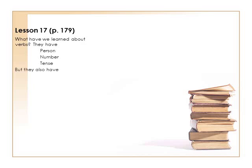But verbs also have — and here's a fourth characteristic that we're now covering in this unit — they also have voice. And just like there are two choices with number, singular and plural, there are two choices with voice in Latin. Some languages have three voices, actually. The boy throws the ball — that's what you see in the picture there. The boy is throwing the ball. This is the active voice. All the verbs that we've been doing so far have been in the active voice. Some of you tried to translate them in the passive voice, but we've only been assigned active voice verbs. Now we're going to be adding the passive.